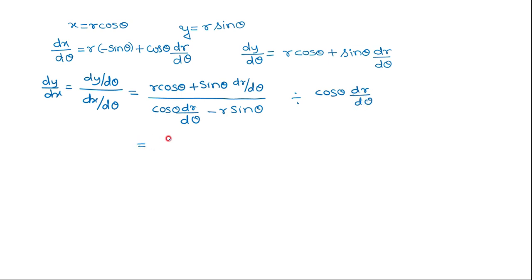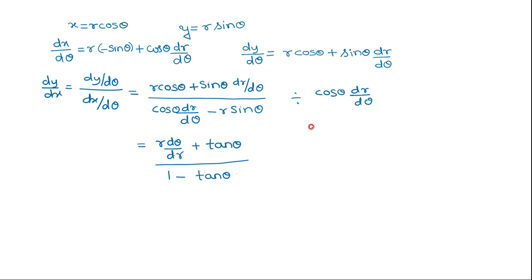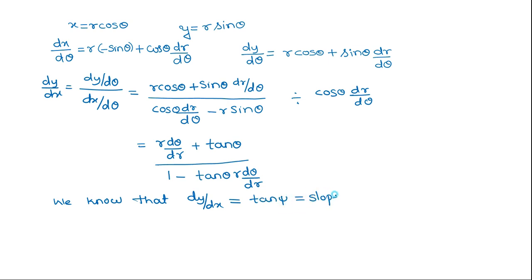Simplifying, dividing numerator and denominator by cos(theta) times dr/d(theta): for the first term, cos(theta) cancels, giving r d(theta)/dr, plus sin/cos gives tan(theta), with dr/d(theta) cancelling. So we get r d(theta)/dr plus tan(theta), divided by 1 minus tan(theta) times r d(theta)/dr. We know that dy/dx equals tan(psi), the slope of the tangent. So this is equation number 2.